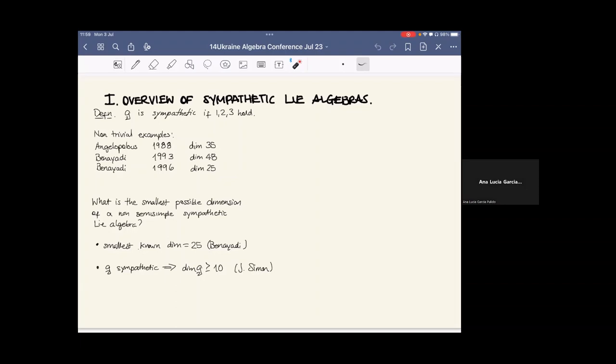Theory was developed to describe some structural properties. Angelopoulos had proved a lot of structural results, and Benayadi and many more people. One of these results is that sympathetic algebra can be decomposed into sympathetic direct factors. This gives us a sense of minimality. But this was not sufficient to show the existence or the non-existence of these algebras in low dimensions.